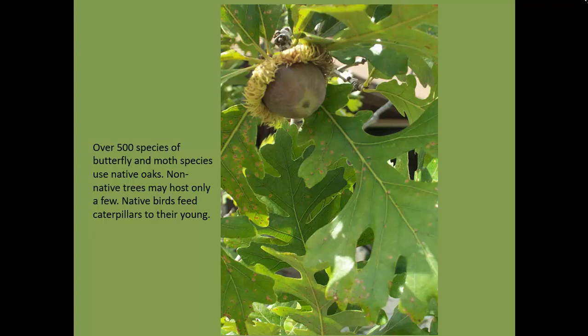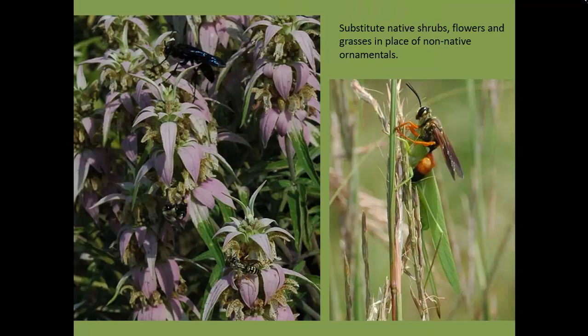Some common substitutions can be made with trees. A common landscaping tree is the Norway maple, which looks superficially like a sugar maple but is not. You can learn to distinguish it fairly easily from the way the fruit looks. Substitute native species that would work in place of Norway maple would be red maple, or black gum if you have a site where you can grow that species.